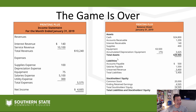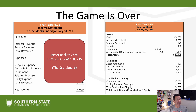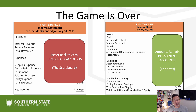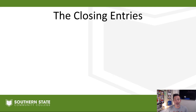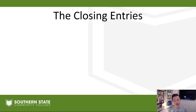We learned about the difference between temporary accounts and permanent accounts in our last video. We learned that the income statement — it's a scoreboard — and those are going to be our temporary accounts. We're going to reset that scoreboard back to zero. On the balance sheet, those accounts are permanent; we don't reset them back to zero. The part we haven't really talked about yet is the closing entries themselves — what accounts are going to be debited and credited. So here we go.